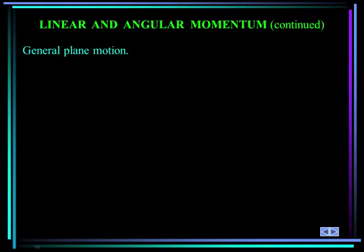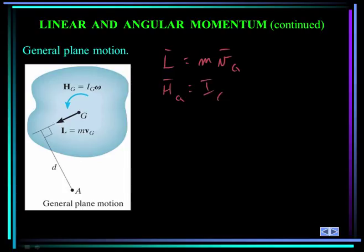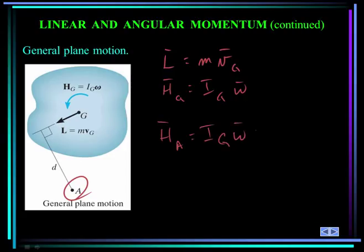The last case is general planar motion, where the body is both translating and rotating. The linear momentum is mass times the velocity of the mass center, and the angular momentum about G is the mass moment of inertia about G times omega. If you want to compute the angular momentum about some general point A, you can do that by I_G * omega plus M times the velocity of the mass center times D, where D is the perpendicular distance between A and the linear momentum vector.